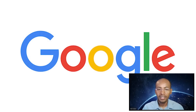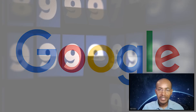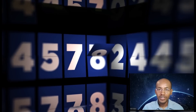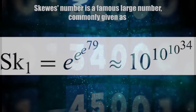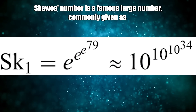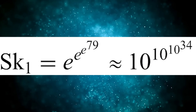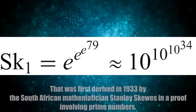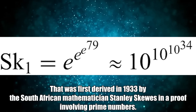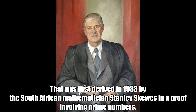Here are some honorable mentions of very large numbers. The Skewes number is a famous large number commonly given as 10 to the power of 10 to the power of 10 to the power of 34. It was first derived in 1933 by South African mathematician Stanley Skewes in a proof involving prime numbers.